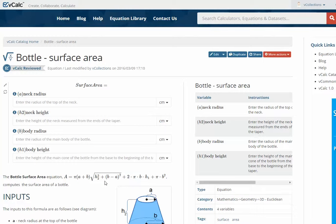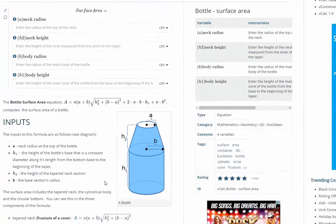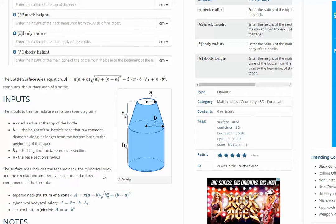This calculator computes the main surface area of a bottle. A bottle, in this case, is the combination of two shapes.